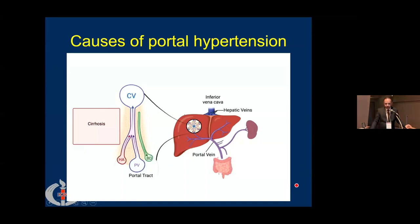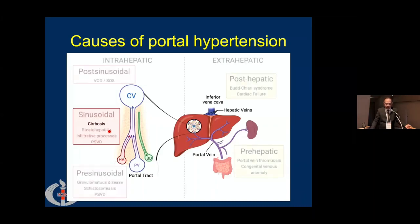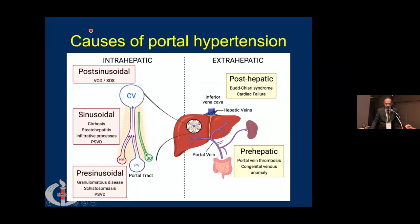What are the causes of portal hypertension? The most important cause is cirrhosis, but apart from cirrhosis there are multiple other causes, labeled as either extrahepatic or intrahepatic. Extrahepatic causes include post-hepatic causes like Budd-Chiari syndrome and cardiac failure, and pre-hepatic causes like portal vein thrombosis. Intrahepatic causes include sinusoidal obstruction syndrome, which is post-sinusoidal or veno-occlusive disease, steatohepatitis, infiltrative liver disease, PSVD, granulomatous liver disease, and schistosomiasis.